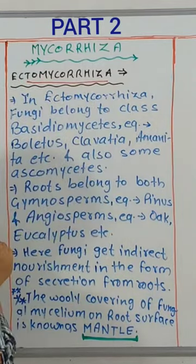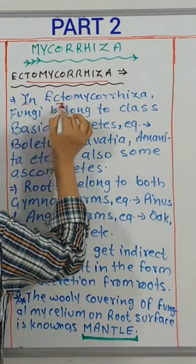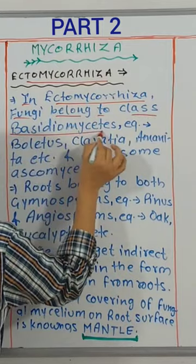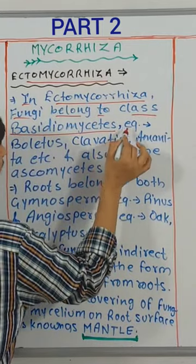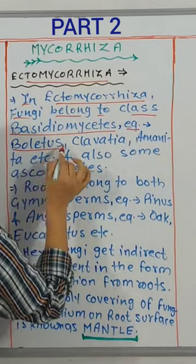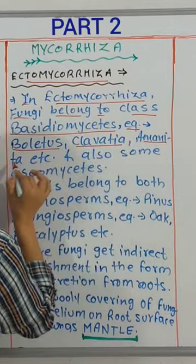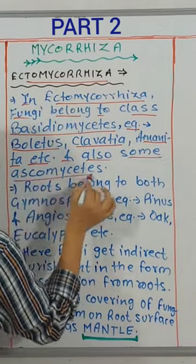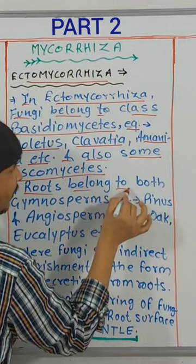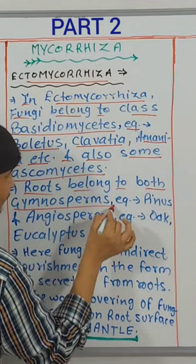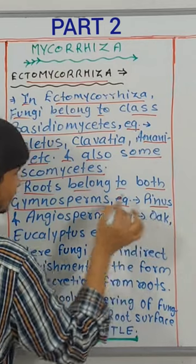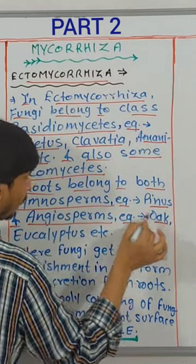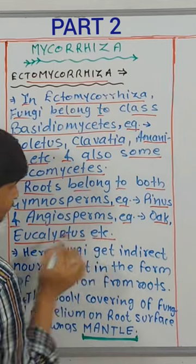Ectomycorrhiza. In ectomycorrhiza, fungi belong to class Basidiomycetes, e.g. Boletus, Clavetia, Amanita, etc., and also some Ascomycetes. Roots belong to both gymnosperms, e.g. Pinus, and angiosperms, e.g. oak, eucalyptus, etc.